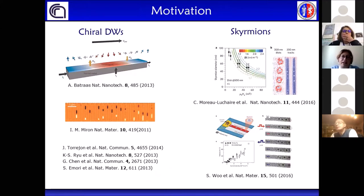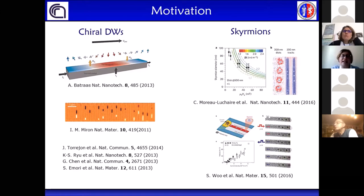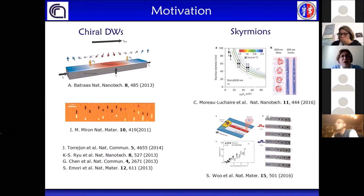As you can see in this picture, the Dzyaloshinskii-Moriya vector is parallel to the surface plane and perpendicular to the unit vector connecting the two neighboring spins. A quite large interfacial DMI has been observed at the interface between ferromagnetic transition metals like iron and cobalt and heavy metals like platinum or tungsten. In particular, in this kind of structure, the interfacial DMI is able to stabilize chiral domain walls, which are characterized by very efficient current-driven motion, and the interfacial DMI plays an important role in stabilizing skyrmions.